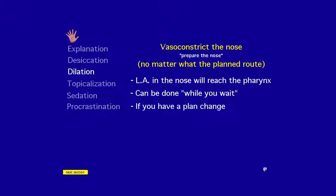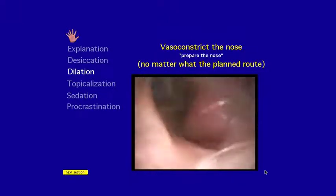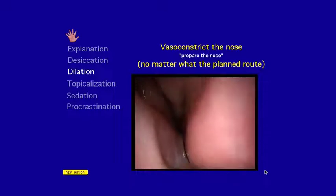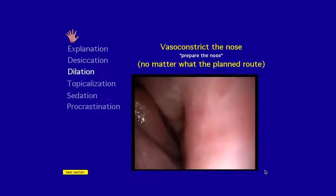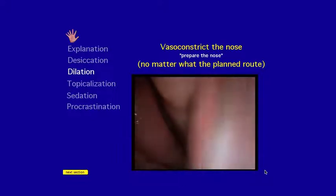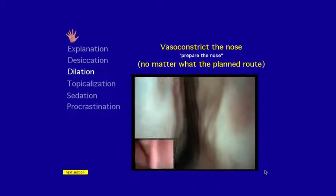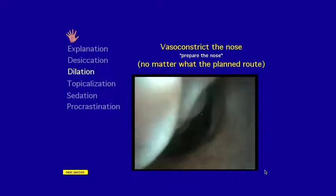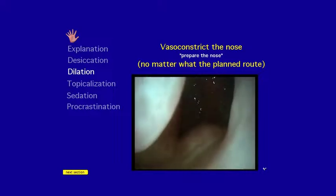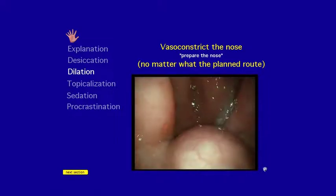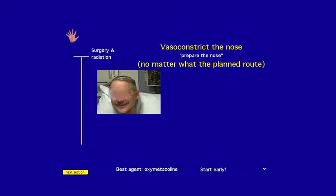A third reason to always prepare the nose is plan changes. If I'm doing an oral intubation and the patient has too much gag, there's less gag reflex elicited when I intubate with a flexible scope through the nose — and if the nose is already prepared, I can switch. An unprepared nasal mucosa is very pink, with blood vessels and little room. A blocked mucosa is pale, more spacious, and allows me to reach the nasopharynx more easily with less pain.